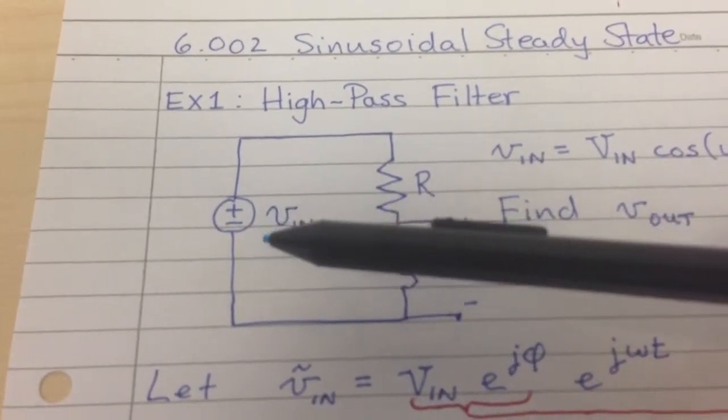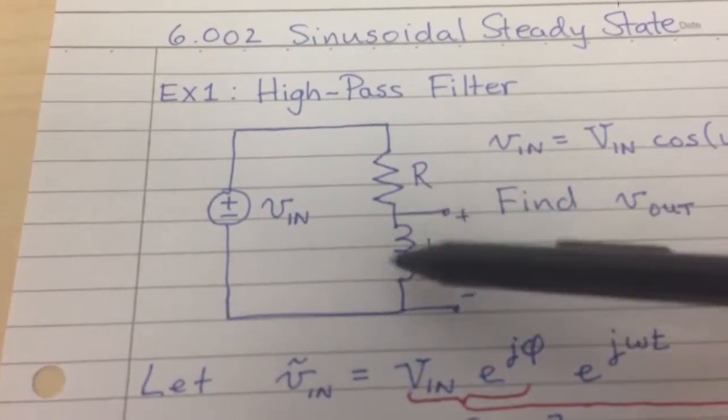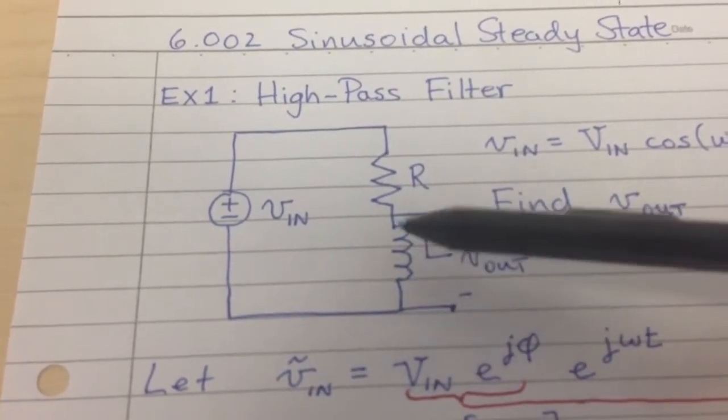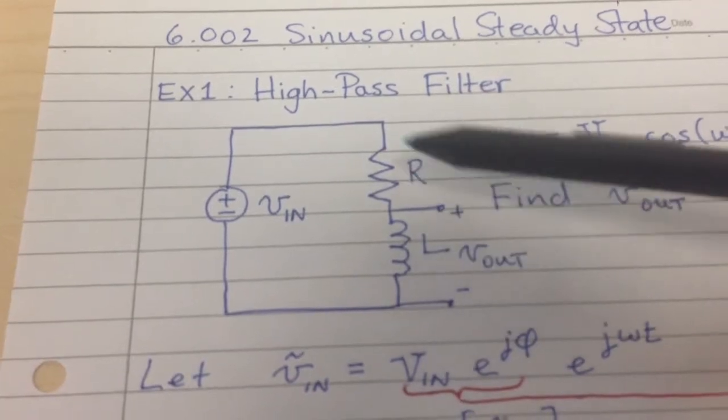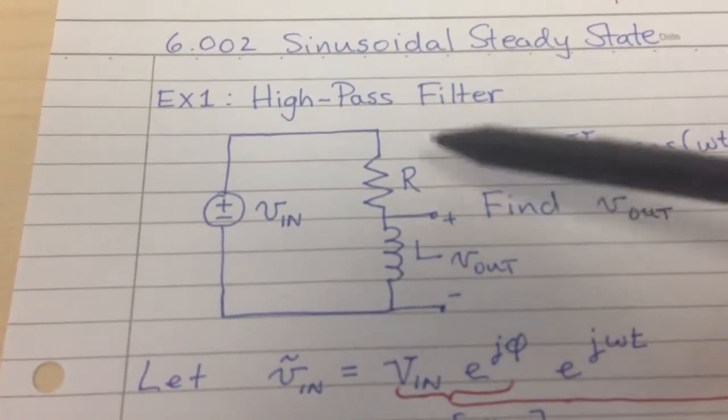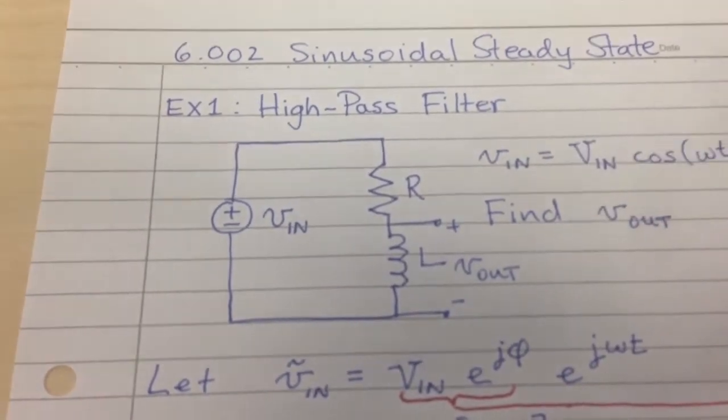If, on the other hand, you have a low frequency, well, this just looks like a wire, and it's basically going to short out the output, so you're going to have a very low output voltage drop compared to the voltage drop across the resistor. So that's another way of seeing why this circuit behaves as a high-pass filter.